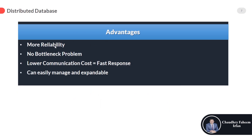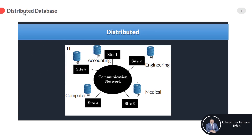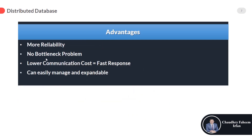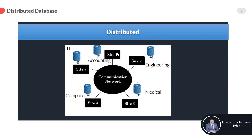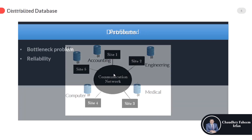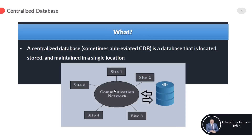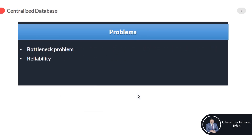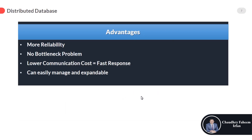The advantages of Distributed Database include more reliability — we can trust distributed databases. If the accounting system fails, all other sites continue working correctly. There is no bottleneck problem because requests are divided across different sites. Unlike Centralized Database, there is no single endpoint for receiving and sending requests. Also, lower communication cost equals a faster response.